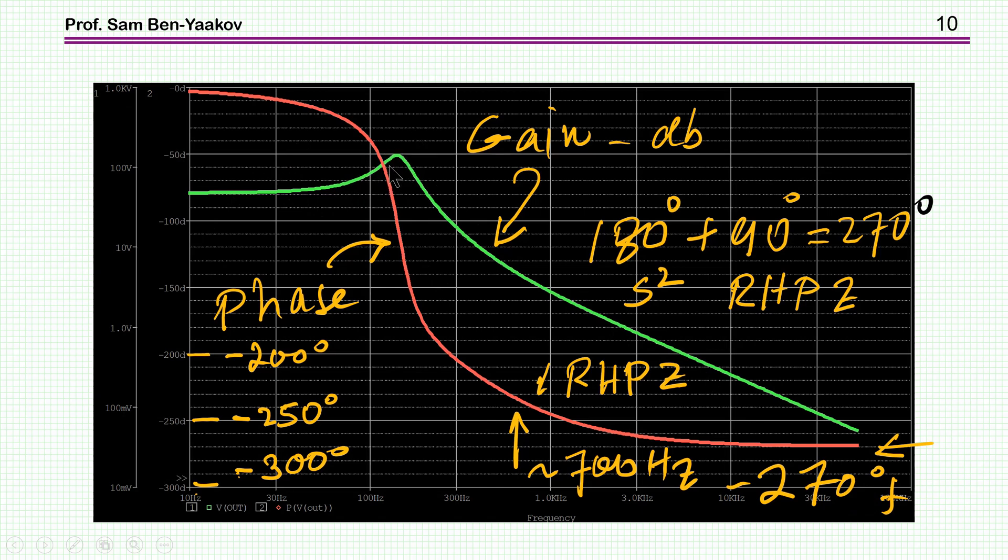And here it is. We see here the gain, this is v out over d small d, and this is the typical second order behavior. We have a peaking here due to the certain Q of the system, and then we see the phase starting with 0, and then it goes down. We're expecting here a minus 180 degree due to the second order system at the denominator, and then we have this extra phase shift lagging due to the right half plane zero which is located here at 700 hertz. And we see that it is still then lagging going to a level of minus 270, that is the 180 plus the 90 of the right half plane zero. So everything looks okay.